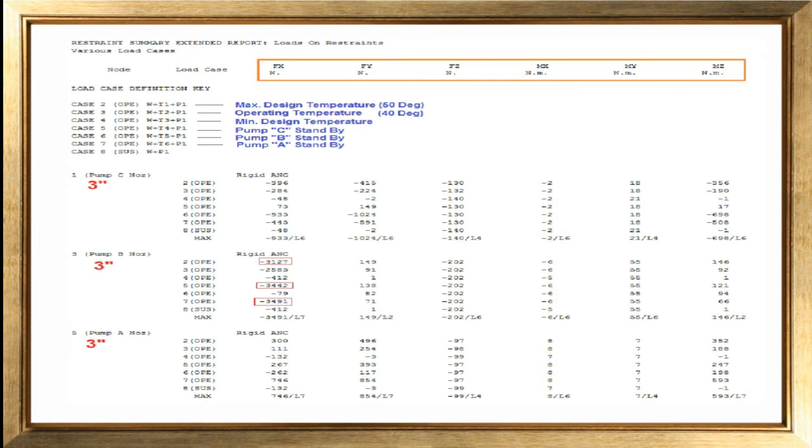So looking at the restraint summary, what we see is that pump A and C piping loads on the nozzle are okay. For pump B, the same is exceeding the levels in the design, operating, and standby conditions where pump B is operating while A and C are in standby.